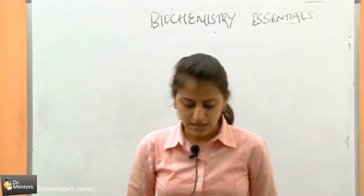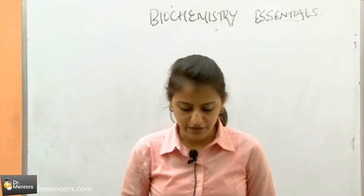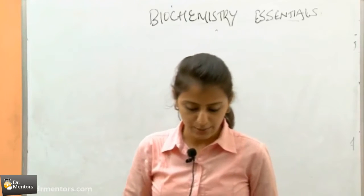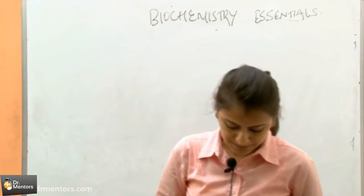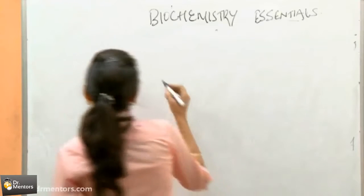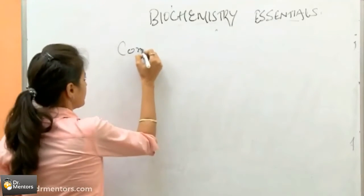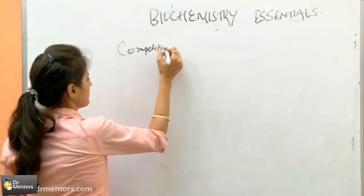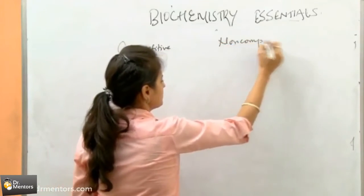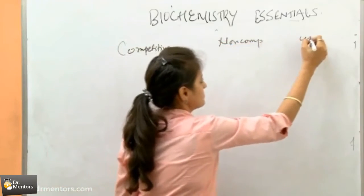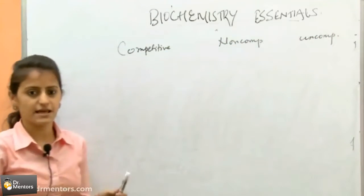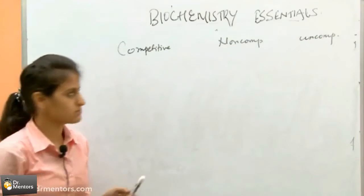Coming to the next question: in competitive inhibition, what is the relation of Km and Vmax? So competitive inhibition, non-competitive inhibition, and uncompetitive inhibition — these are the three types of enzyme inhibition.